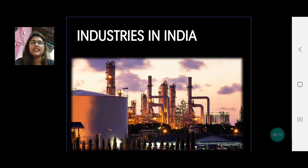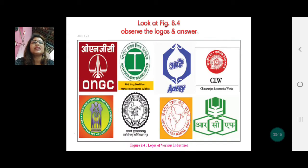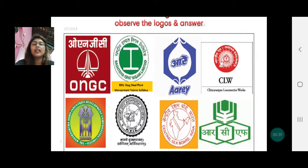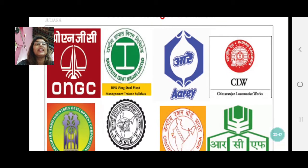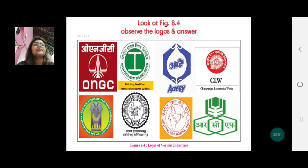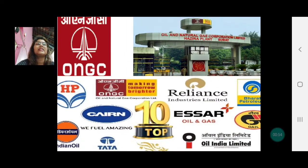You have an activity on page 57 wherein you have been given certain logos and you need to identify which company each logo belongs to, what raw material it uses, and from where the raw material comes. To answer the third question you need to refer to the mining part. I would advise you to pause the video for a little while and identify them, as some are very easily identifiable, then come back.